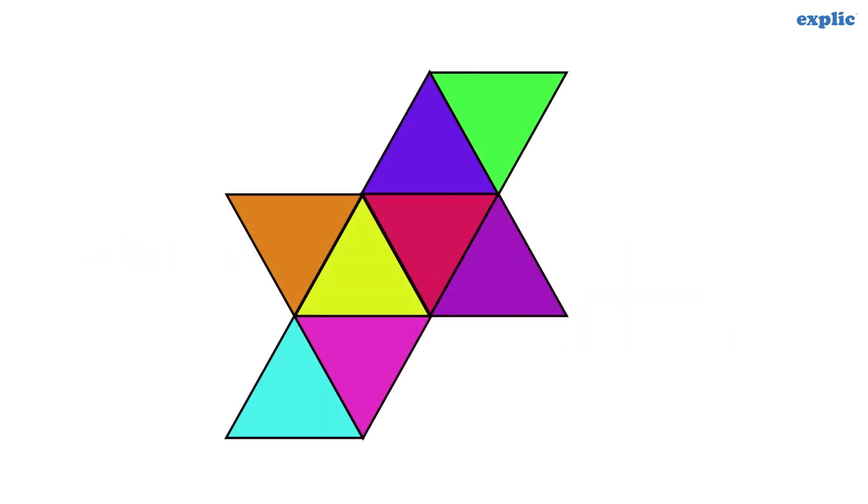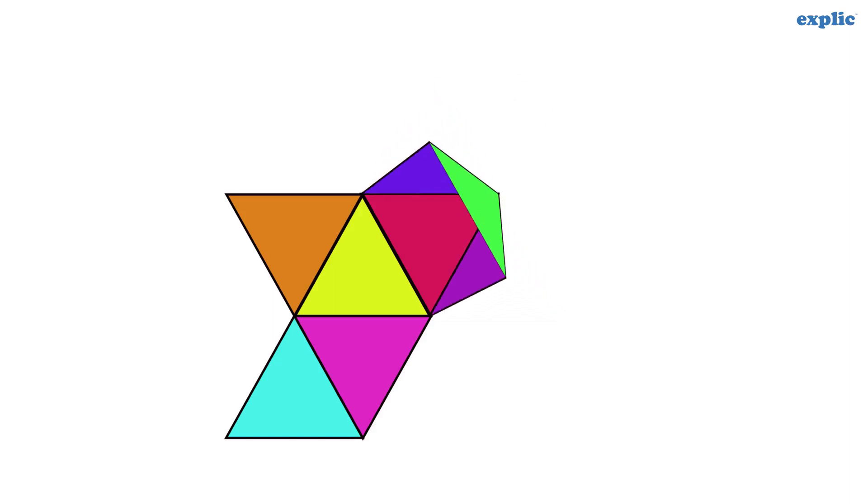Another example of regular polyhedron is octahedron which is made of eight equilateral triangles. And four triangles meet at each vertex.